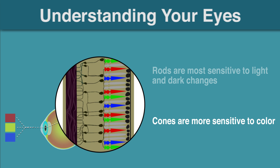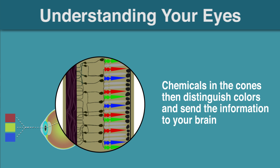So for those with poor color vision, cones are responsible. Chemicals in the cones distinguish colors and send the information to your brain. For those with poor color vision, they might lack certain cones or have weak cones for a particular color.